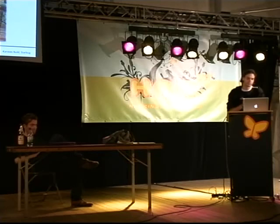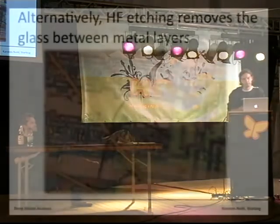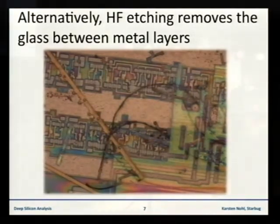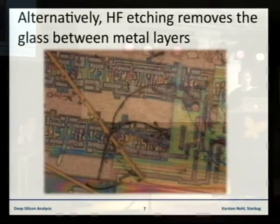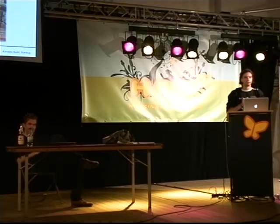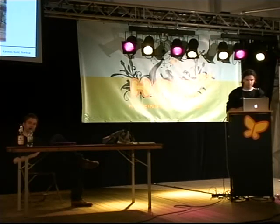There's another possibility to get to the single layers, called wet etching with hydrofluoric acid. The hydrofluoric acid attacks the silicon dioxide, which is an insulator between each layer. But as you can see in this picture, there's a problem with getting to exactly one layer — normally you will dissolve some parts between layer 1 and 2, and between layer 2 and 3, so you don't have a complete single layer etched away.